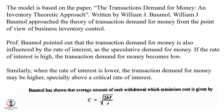The transaction demand for money and an inventory-theoretic approach: one person who demands money for a transaction purpose will actually take into consideration the rate of interest. That is why we have a square root formula: C = √(2bY / r). B stands for broker commission, R stands for rate of interest. This is from William J. Baumol's theory.